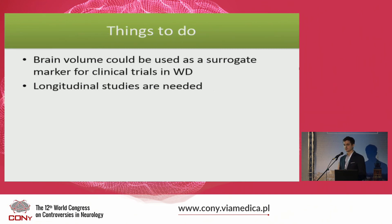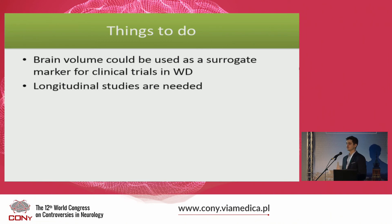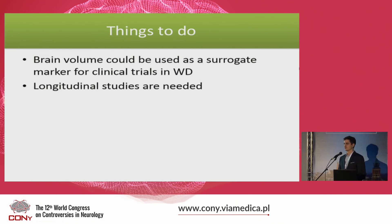In conclusion, we believe brain volume is a correlate of neurological impairment in Wilson's disease, and that brain volume is associated with copper overload. In future, brain volume could be used as a surrogate marker in clinical trials in Wilson's disease, but first we need longitudinal studies to determine whether changes in neurological impairment correlate over time with changes in brain volume. Thank you.